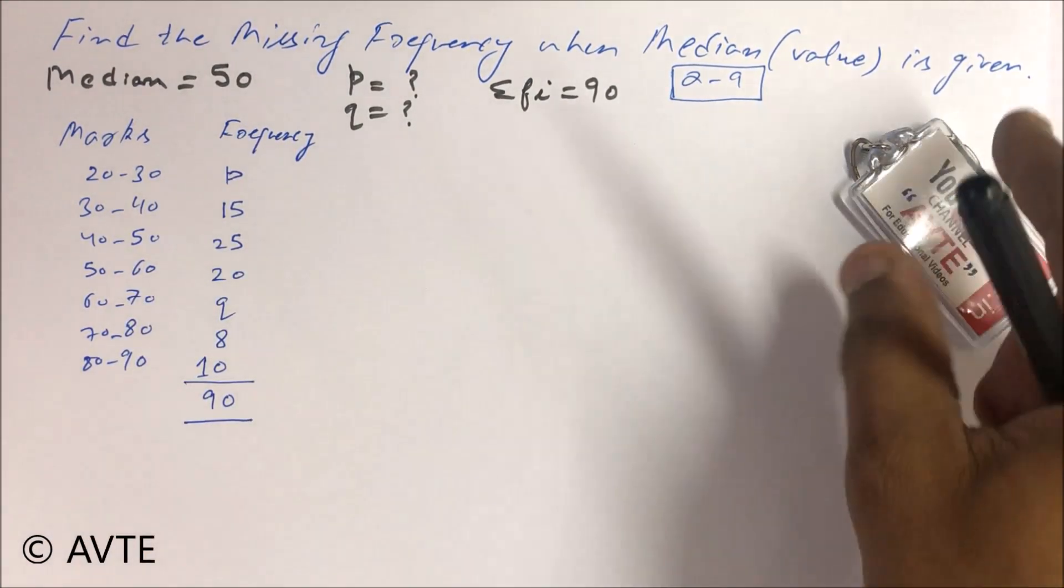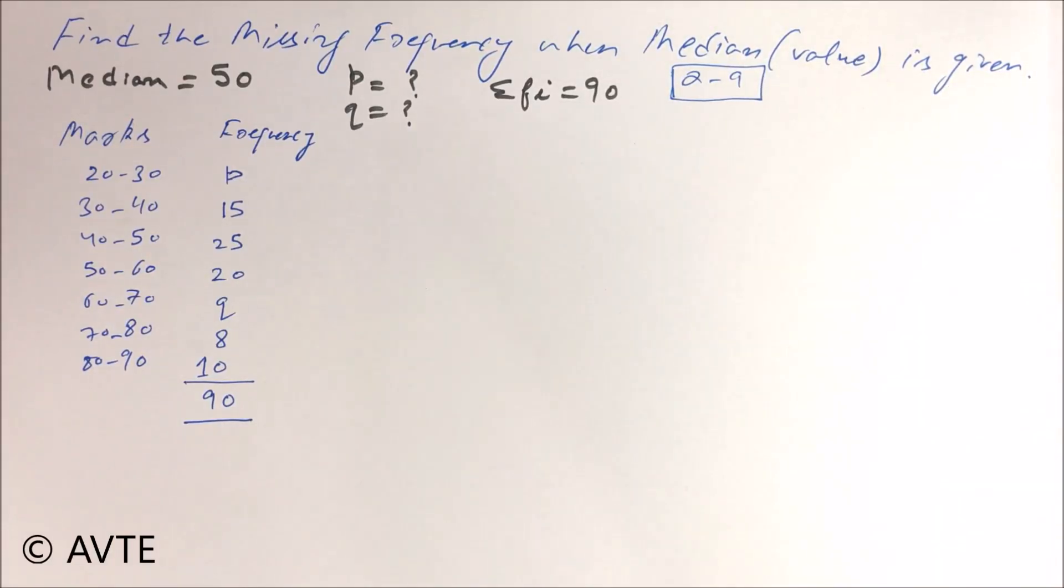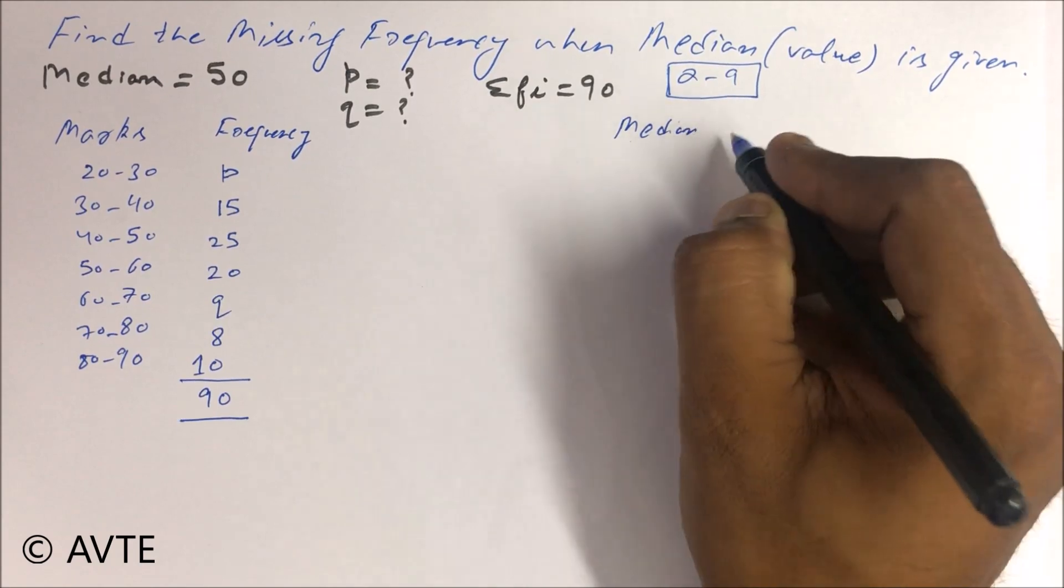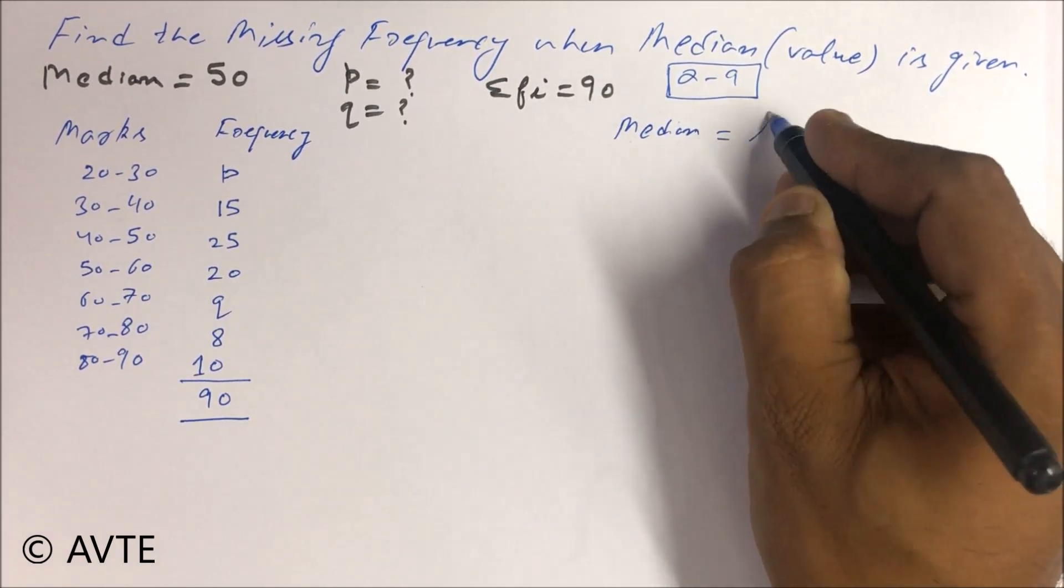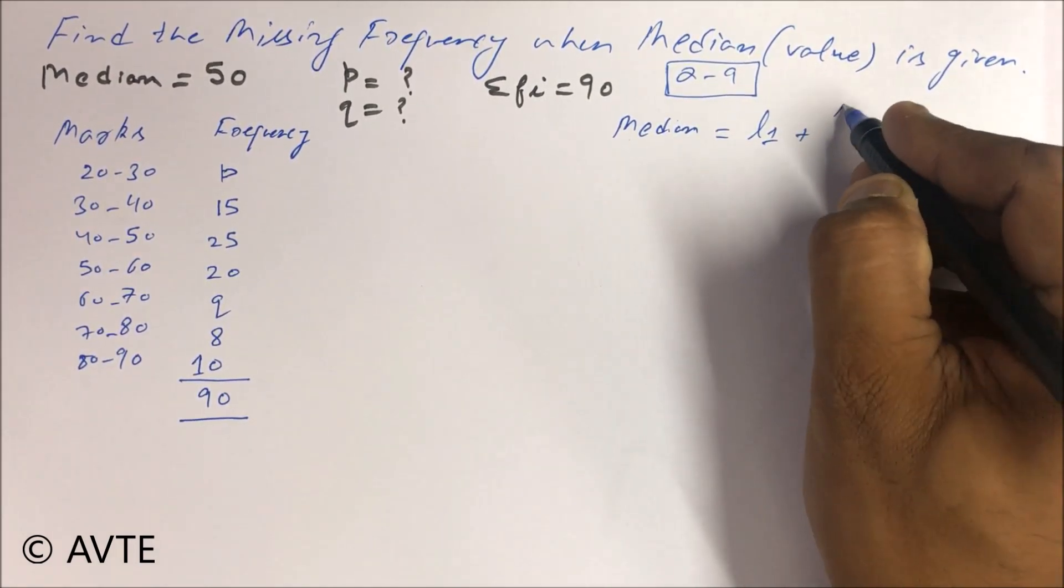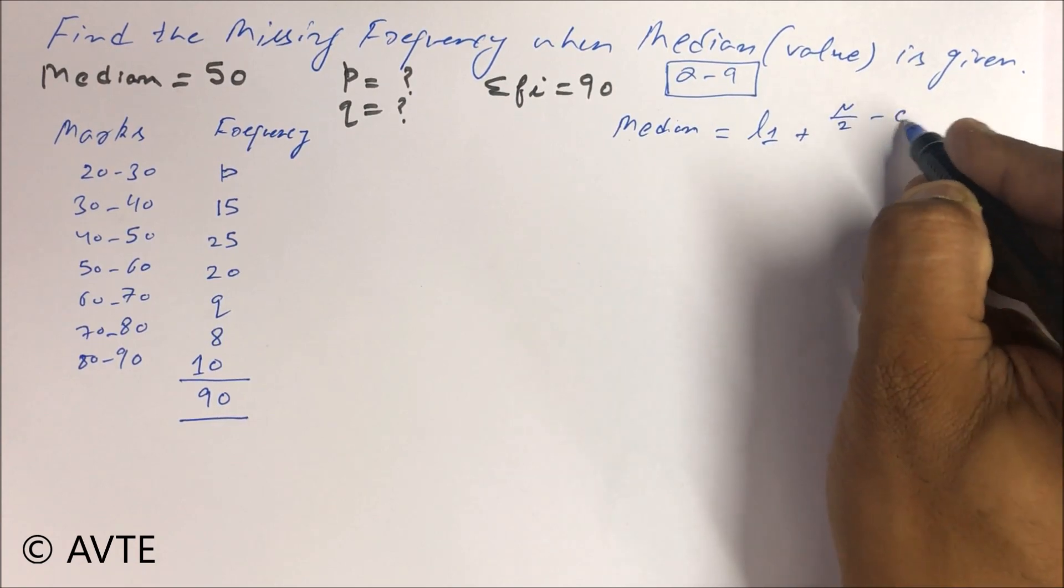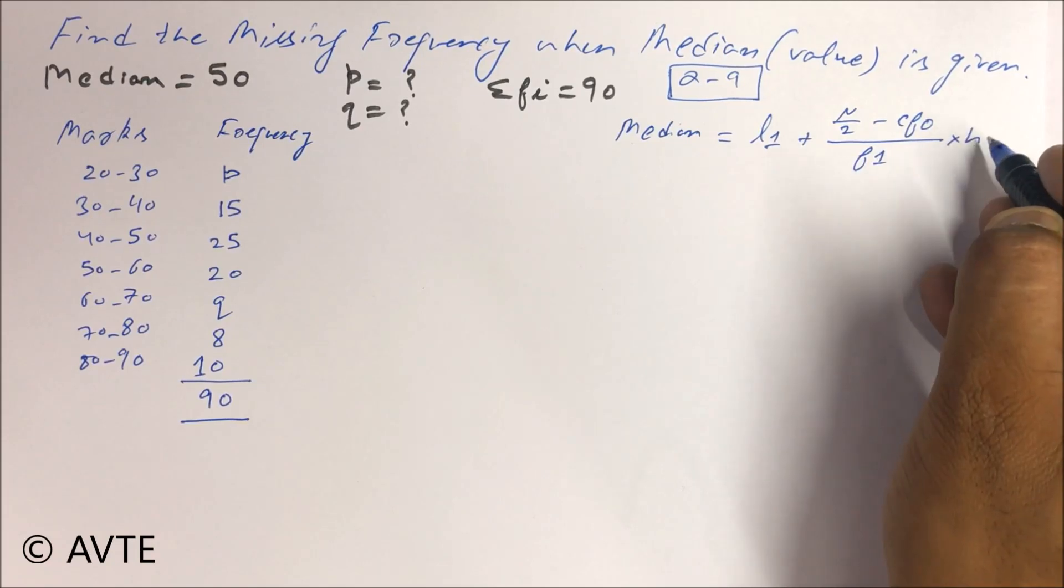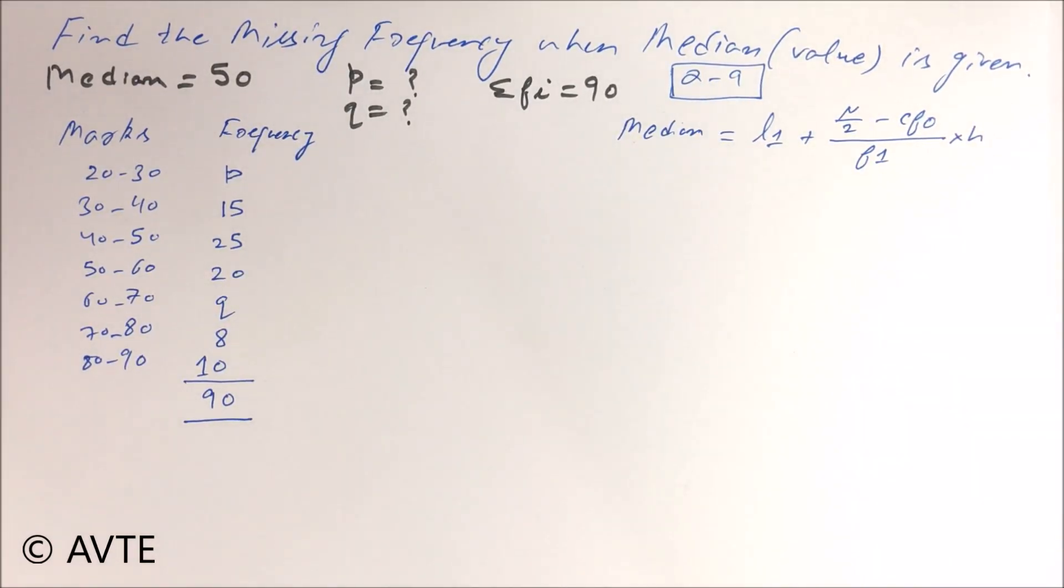What is the formula of median? The formula of median is L1 plus N by 2 minus CF0 upon F1 into H. I hope you have seen our videos related to statistics.